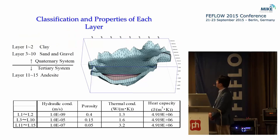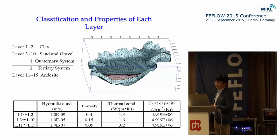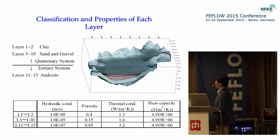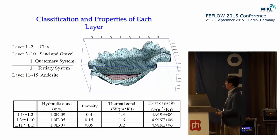This grid map shows the 3D view of the large-scale groundwater flow model, 70 by 55 km in size. The geological layers are divided into three geologies. Layers 1 and 2 are a clay layer that only exists at the coastline. Layers 3 to 10 are sand and gravel with good hydraulic conductivity of the quaternary system. Below the sand and gravel layer, we have a basement of andesite. These are the physical properties of each layer, and the hydraulic conductivity of layers 3 to 10 is the largest.